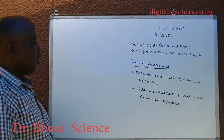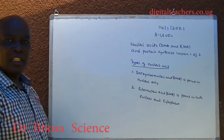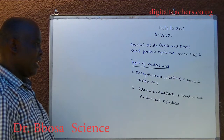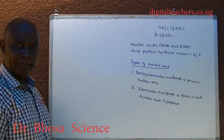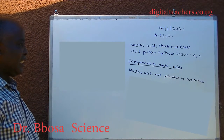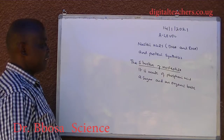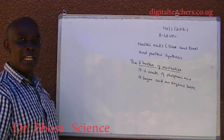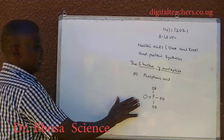Types of nucleic acids. One, deoxyribonucleic acid (DNA) is found in the nucleus only. Two, ribonucleic acid (RNA) is found in both nucleus and cytoplasm. The components of nucleic acid: nucleic acids are polymers of nucleotides. The structure of a nucleotide is made of phosphoric acid, a sugar, and an organic base. The structure of phosphoric acid is given below.